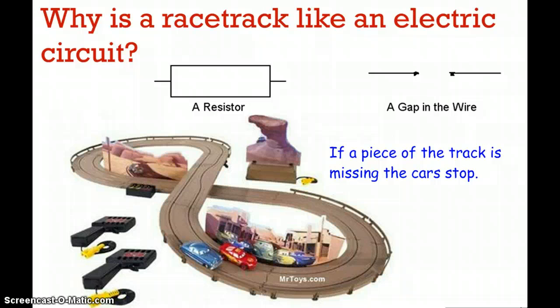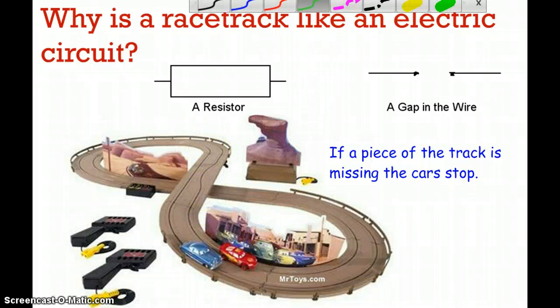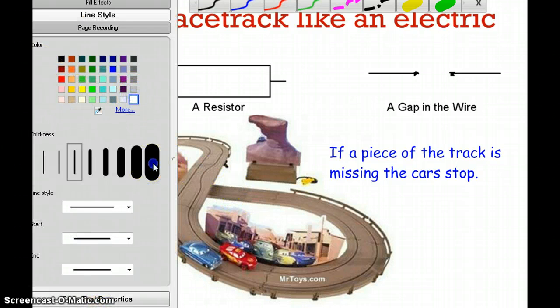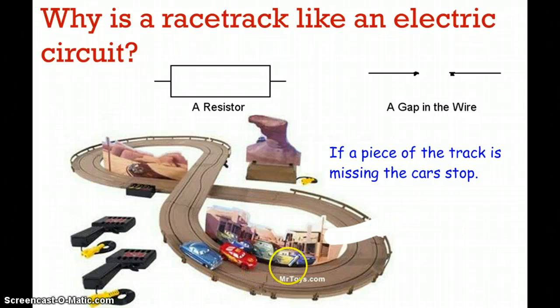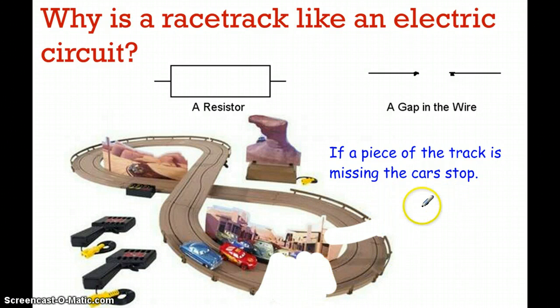Why is a racetrack like an electric circuit? Well, in the same way, picture cars like electrons. They're following a path, and so they're moving. But if for some reason there happens to be a break in the path, then the electric current is not going to flow. Let's say I break the path. Bam! Or here. Bam! That means that the cars can't pass. And since the cars can't pass, the electric current is going to stop. If the piece of the track is missing, the car stops.